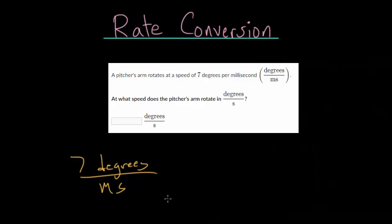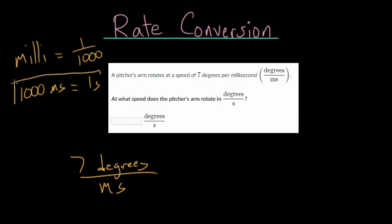To be able to convert this to seconds, we first need to ask, well, how many milliseconds are there in one second? What you'll learn with the metric system is that when you have the root word milli, this just means one thousandth. If you have a millimeter, you have one thousandth of a meter, or there are one thousand millimeters in one meter, just like there are one thousand milliseconds in one second. This is our rate here, this is our equivalency that we need to use to convert our units.